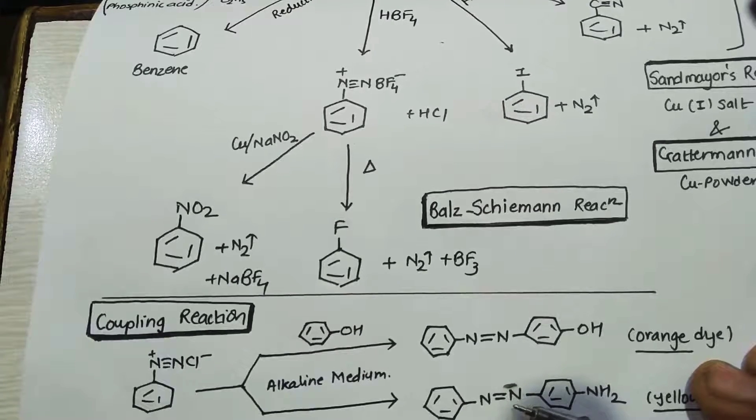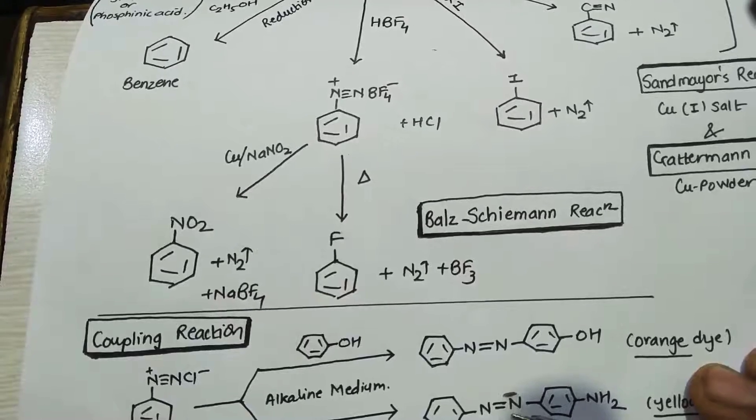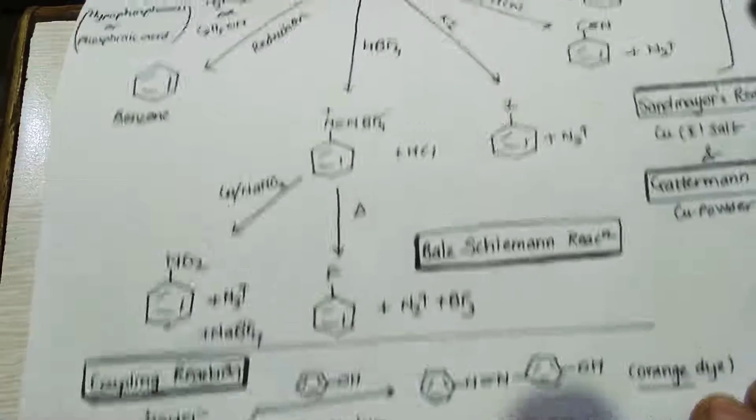So this was benzene diazonium, a very short quick note. We have recapped this. Now in the next class, we will have a look at a recap of another chapter. Thank you very much.